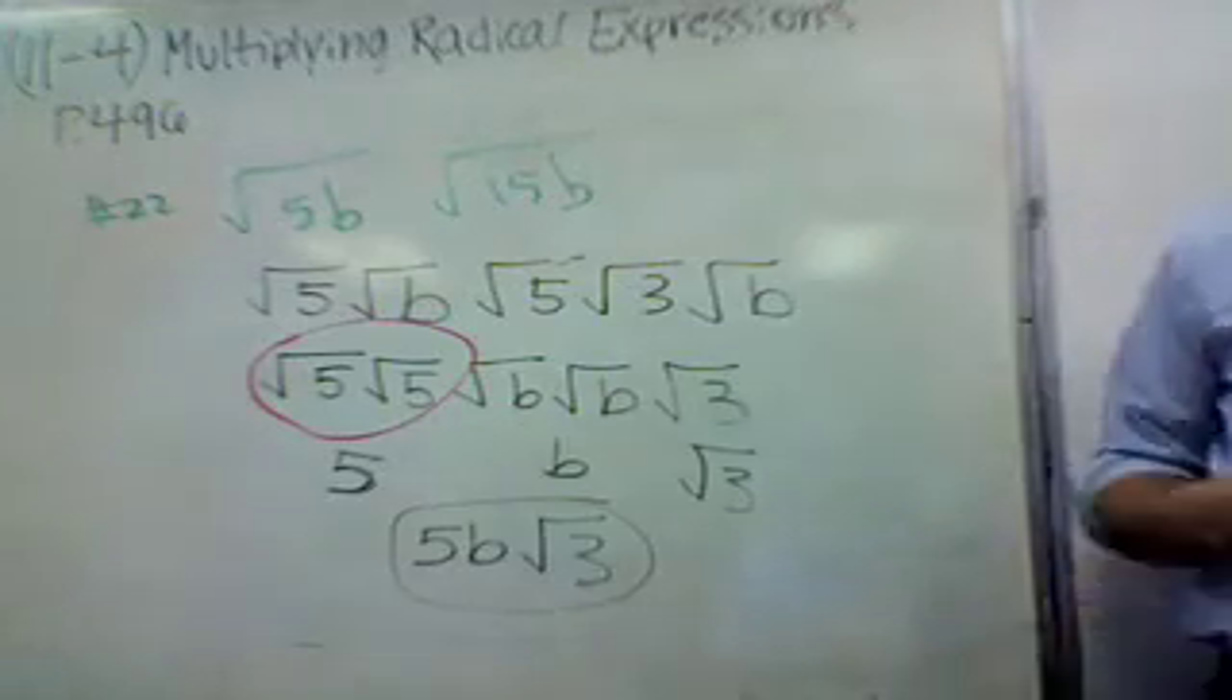Okay, we're going to work out number 22. We're given root 5b times root 15b, and we've already gone ahead and done this, but we break it down. We take root 5 times root b, because we break the numbers and the letters apart. Root 15b, there's not much we can do other than go root 5 times root 3 times root b. That's about it. Then root 5 times root... What we did is rearrange things, so we put the doubles together. Doubles are good. Root 5, root 5 together. Root b, root b together. And then root 3, we've got 5b root 3. 5b root 3 is our answer. It's pretty simple once you get the hang of it. You're trying to break things down until you get doubles.